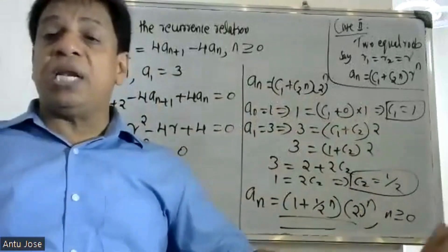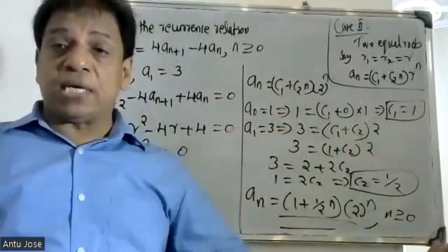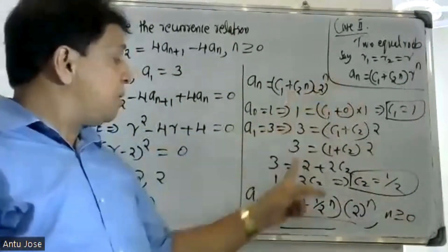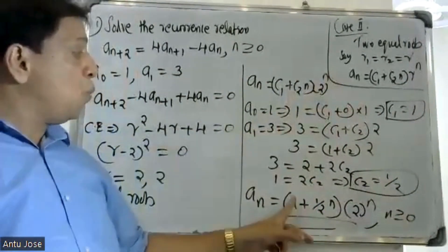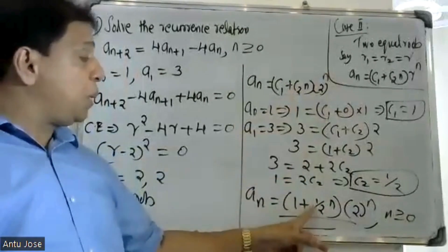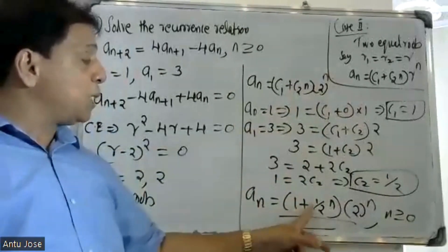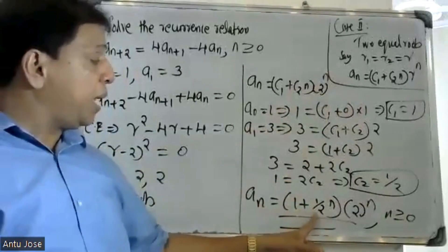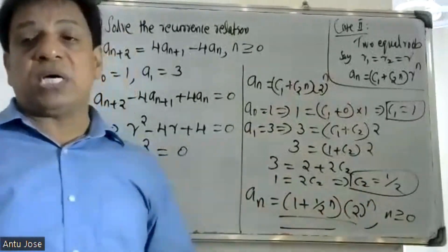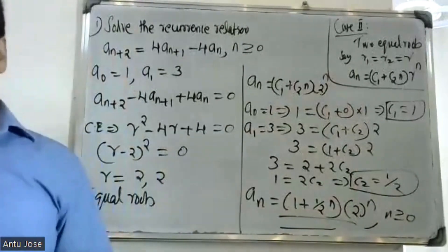Our final solution is: a(n) = (1/2) · 2^n + (1/2) · n · 2^n. That is the final solution.